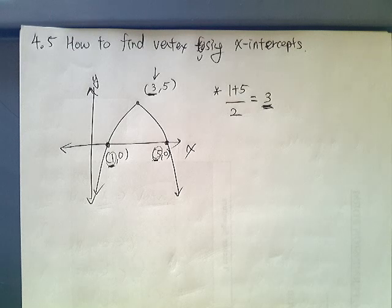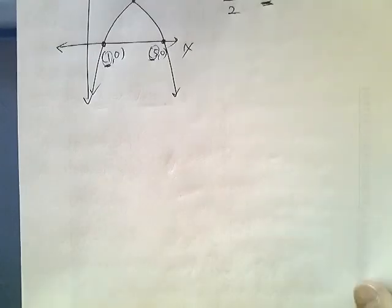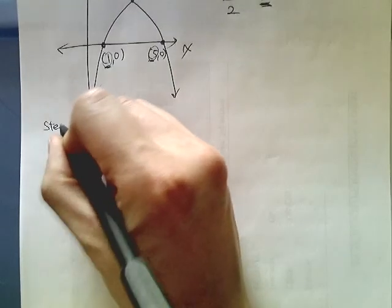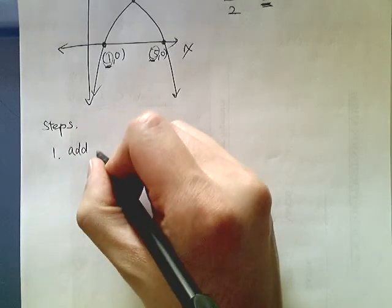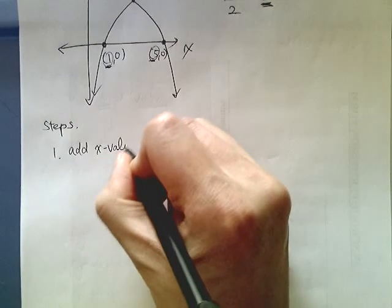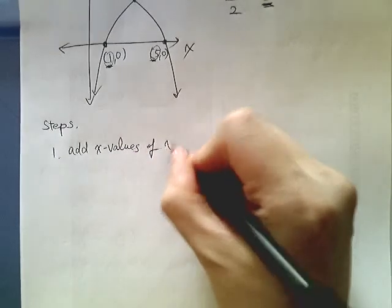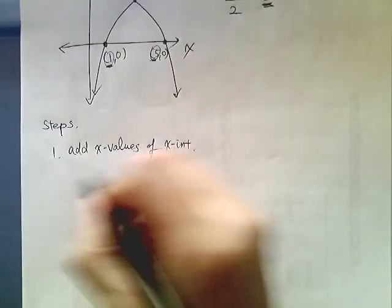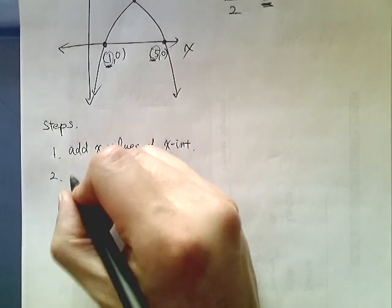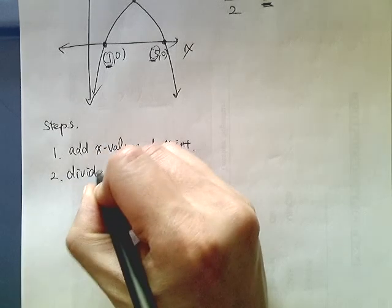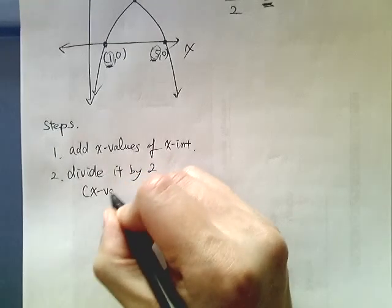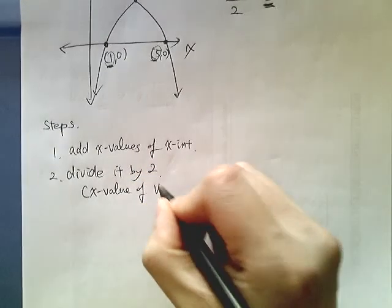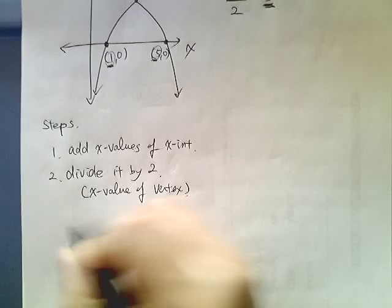Now, we are using this concept to find what the vertex is. So the step is very simple, okay? So the steps are, the first one is, well, basically add x-values of x-intercepts. Now, 2, then divide it by 2. And that is your x-value of the vertex, okay?